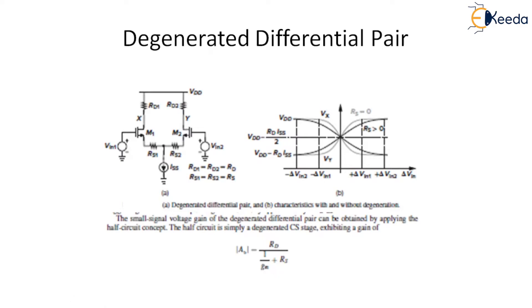A degenerated differential pair uses degenerative resistances at the sources to soften the non-linear behavior. It increases the magnitude of the differential voltage needed, and the gain is simply the degenerated common source stage which equals Rd over 1 over gm plus Rd. This is all about degenerated differential pair.